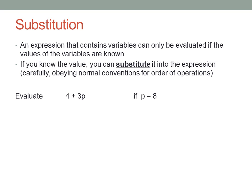Let's try a few more. Evaluate 4 + 3p if p equals eight. So, where the p is, put eight. But again, it's not three eight, which would be thirty-eight. It's three times eight. Now follow the normal order of operations. Three times eight is twenty-four, and four plus twenty-four is twenty-eight.